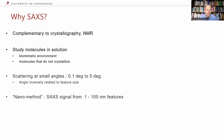Why SAXS? SAXS is a complementary technique to crystallography, NMR, and other techniques. It allows the study of molecules in solution in potential biomimetic environments, also of molecules that do not crystallize. It studies scattering at small angles — typically 0.125 degrees — and this scattering angle is inversely related to the feature size. It is inherently a nanomethod since the feature sizes studied are from 1 nanometer to 100 nanometers, typically.